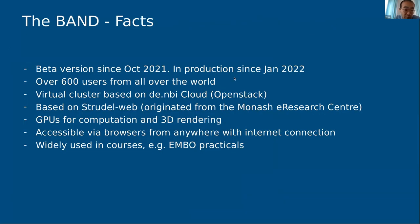Some facts about BAND: it was in beta since October 2021 and in production since January 2022. We currently have more than 600 registered users. The backend infrastructure is virtual and hosted on OpenStack provided by the DKFZ cloud. We borrowed some components from the Monash e-research center that were used to build Strudelweb. BAND has GPUs for both computation and 3D graphic rendering, and it can be accessed from anywhere in the world with internet access.